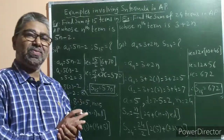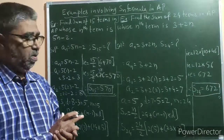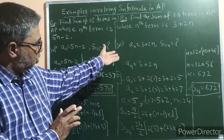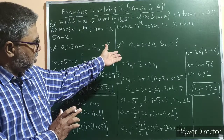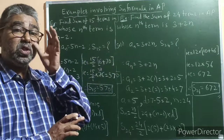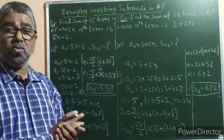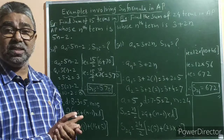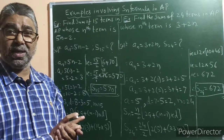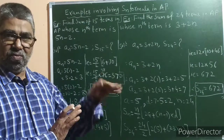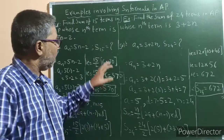In this way, if the nth term is given, we can solve for the sum of terms. We can also solve these examples using the alternative formula Sn = n/2 × (a + l), which we shall see in later videos.